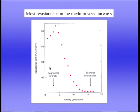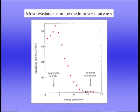Although each small airway has high resistance due to its small radius, sharing that resistance over this very large number of airways means the total resistance of the very small airways is actually quite small. Most of the resistance is in the medium-sized airways. The very small airways down at terminal bronchioles contribute very little resistance.